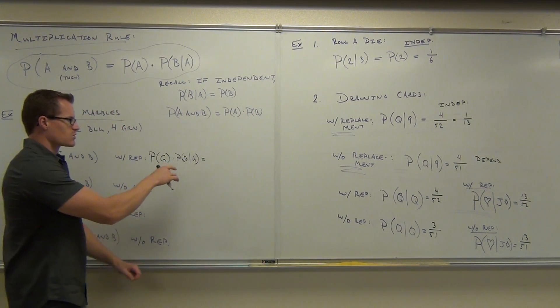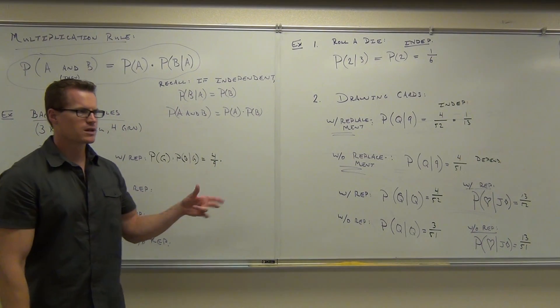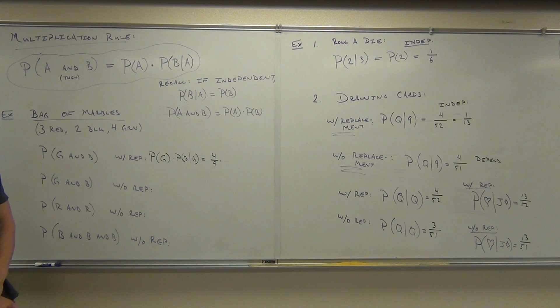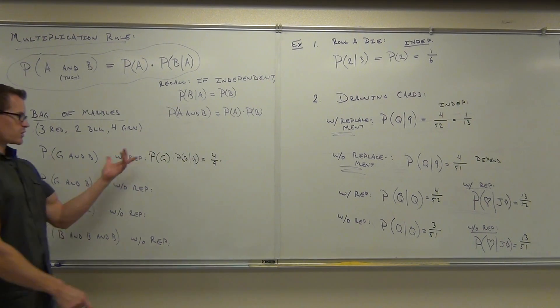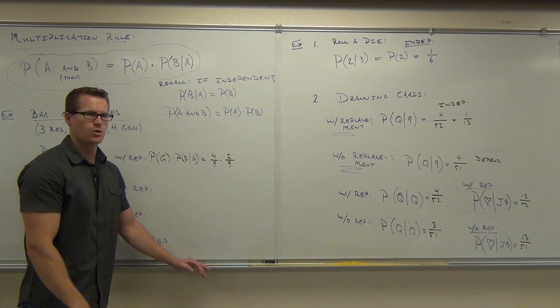So what's the probability of selecting a green? You said four out of nine. What's the probability of selecting a blue marble, given you selected a green marble first? What's the probability of selecting a blue marble now, given you just pulled out the green one? Two out of nine. Why out of nine? With replacement. Yes, it's with replacement. So there's still two blue marbles. There's still nine marbles total.